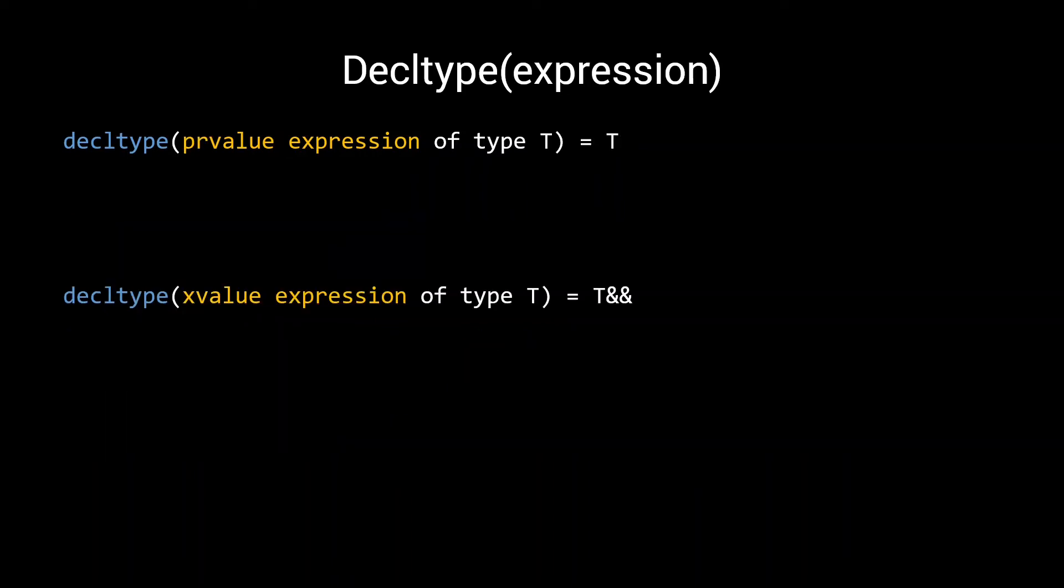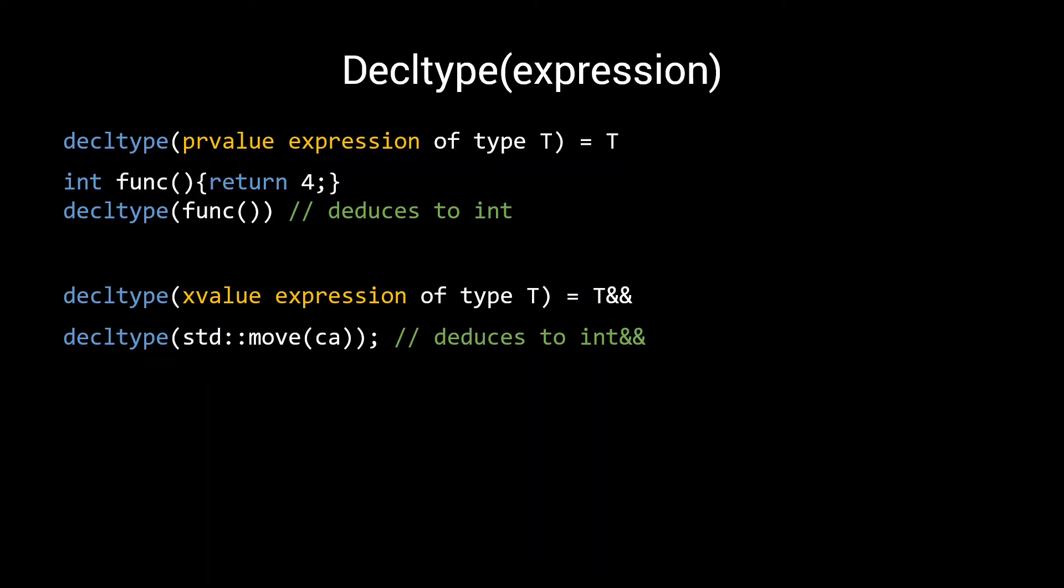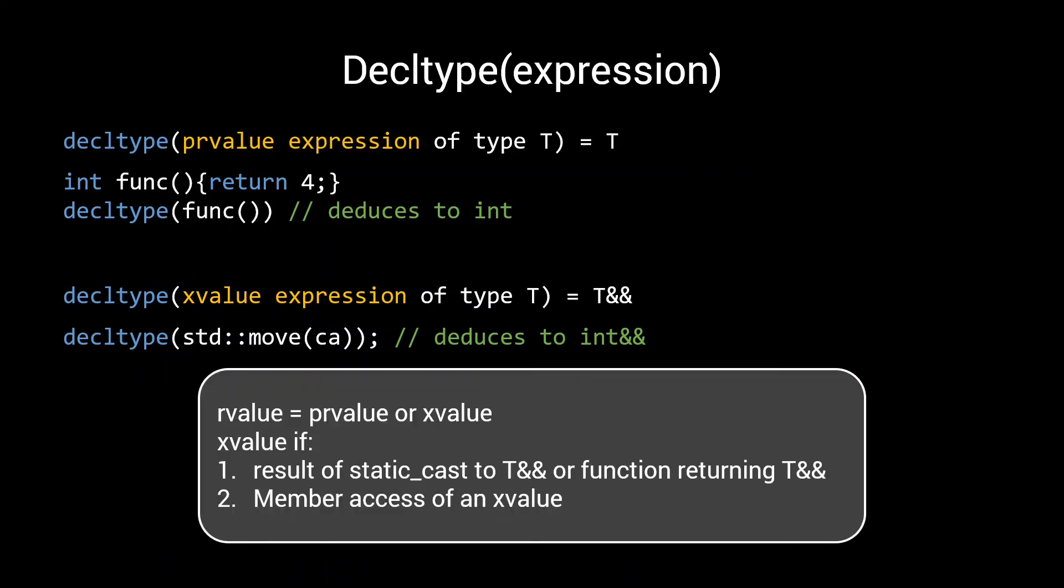When dealing with rvalue expressions, things get a bit more complicated, as here the decltype deduction rules make a distinction between prvalues and xvalues. When dealing with a prvalue expression of type T, the deduced type will be T. When dealing with an xvalue expression of type T, the deduced type will be an rvalue reference to T. If you're not familiar with the rules for breaking down your rvalues into prvalues and xvalues, it roughly boils down to the following. An rvalue is always either a prvalue or an xvalue. PR stands for pure rvalue. Xvalue stands for expiring value.